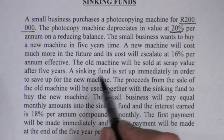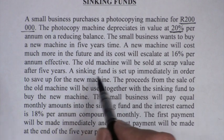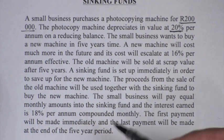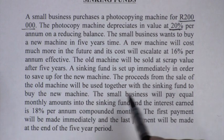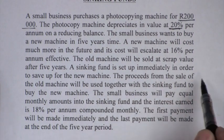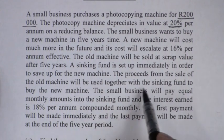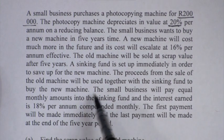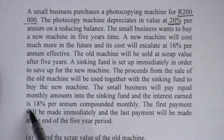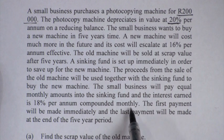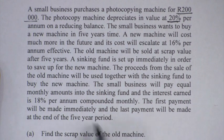A sinking fund is essentially a future value annuity. But when we set up a fund to replace a car, a truck, or a photocopy machine, we refer to it as a sinking fund. This sinking fund is set up immediately to save up for the new machine. The proceeds from the sale of the old machine will be used together with the sinking fund to buy the new machine. The small business will pay equal monthly payments into the sinking fund, and the interest earned is 18% per annum compounded monthly. The first payment will be made immediately, and the last payment will be made at the end of the five year period.